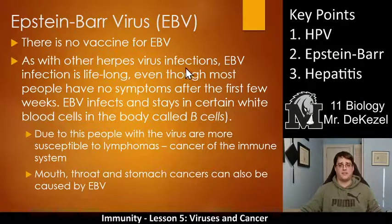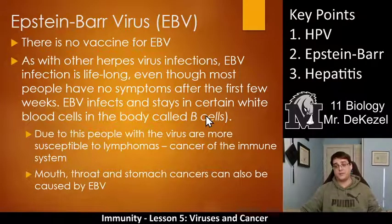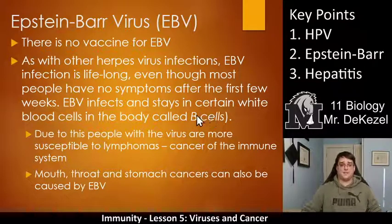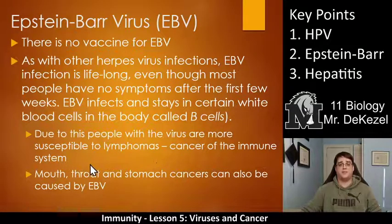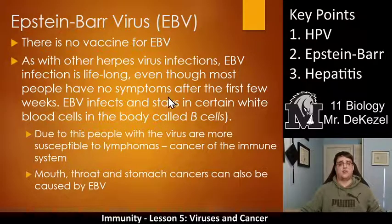As with other herpes virus infections, you have that virus your entire life. Even though people don't have any symptoms after the first few weeks, that virus will just stay there forever, remaining in certain white blood cells called B cells. Because this virus infects B cells, people with this virus are more susceptible to lymphomas, which is cancer of the immune system. Cancers of the mouth, throat, and stomach are also caused by EBV. There is no vaccine for it currently, and it does not cause cancer in everyone who gets it — a very small number of people who get it get cancer. It's just another risk factor.